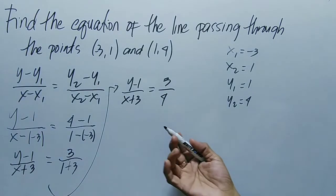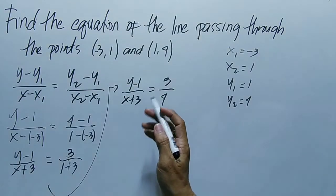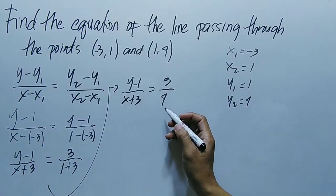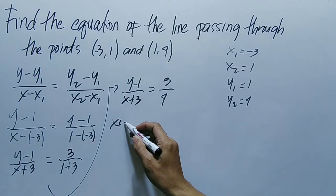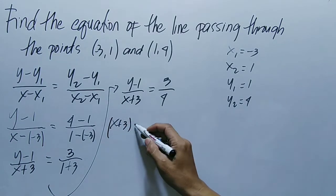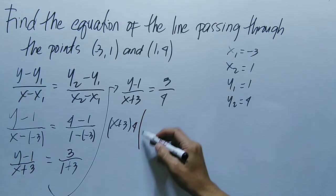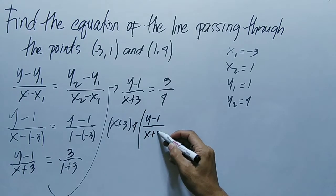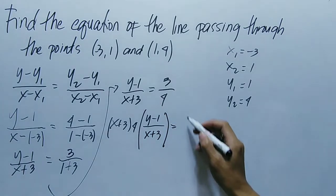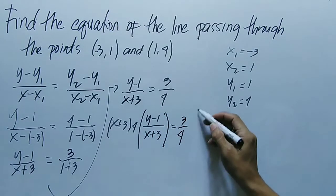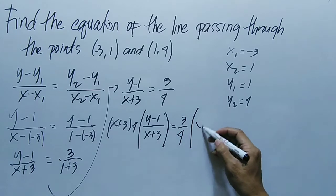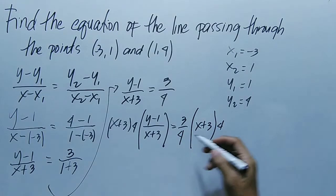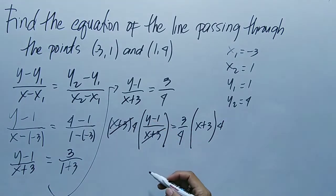So now, multiply both sides by x + 3 times 4. So (x + 3) times 4 multiply to (y - 1) over (x + 3) equals 3/4 multiply also by (x + 3) times 4.